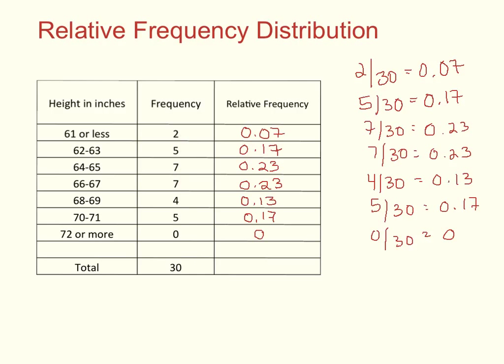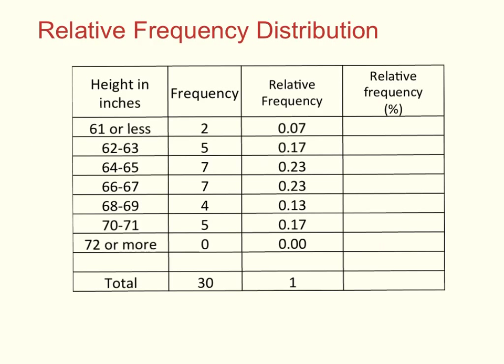Now we've calculated all the proportions and put them in this relative frequency column. These proportions all add up to 1. Here's our relative frequency table. Often the relative frequency table is expressed in terms of percents. We can just change these numbers over here from proportions to percents, so we'll have 7%, 17%, 23%, and so on. That will add up to 100%.